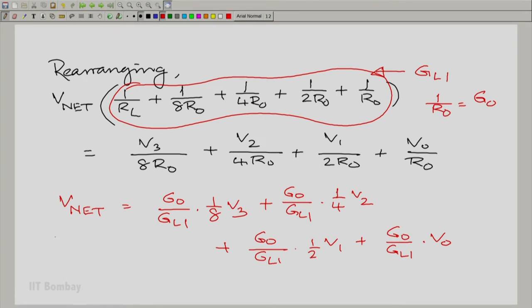You notice that Vnet has a combination of four terms. It is proportional to a sum of 1 by 8 times V3 plus 1 by 4 times V2 plus 1 by 2 times V1 plus V0. V0 is being given the most significance, V1 is being given half that significance, V2 one fourth and V3 one eighth. You could think of V0 as being the most significant bit here and V1, V2 and V3 in decreasing order of significance.